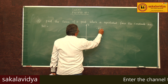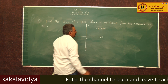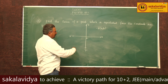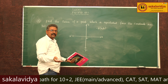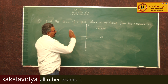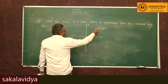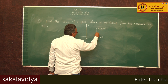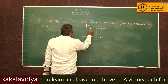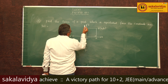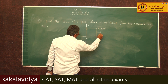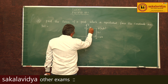Let us take P(x1, y1) be any point in the first, second, third, or fourth quadrant. For convenience, let us take P(x1, y1) in the first quadrant. The distance from P to the x-axis — draw perpendicular PA — is |y1|. The distance from P to the y-axis — draw perpendicular PB — is |x1|.